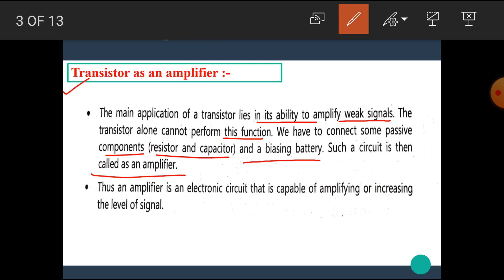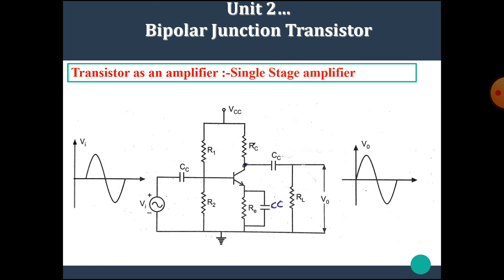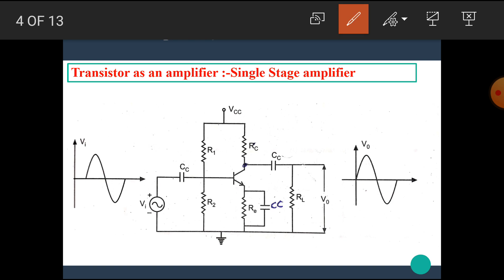The transistor alone cannot perform this function. We have to connect some passive components such as resistors and capacitors and biasing circuitry or battery. Such a circuit is then called as the amplifier. An amplifier is an electronic circuit that is capable of amplifying or increasing the level of the signal. If any signal is weak in nature, then to make it strong, we have to connect it to the amplifier circuit. This is the transistor amplifier circuit shown here in which the passive components such as resistors and capacitors are connected across it.